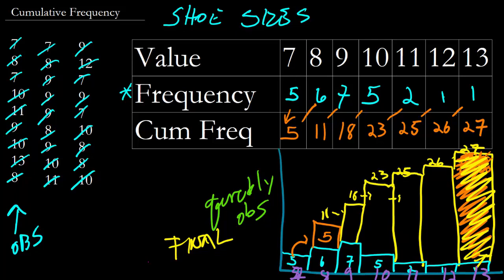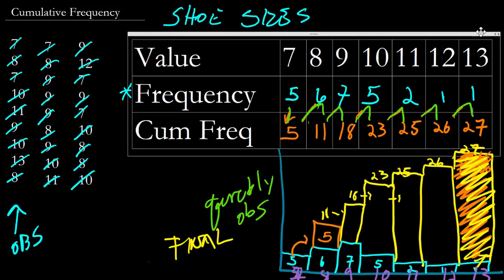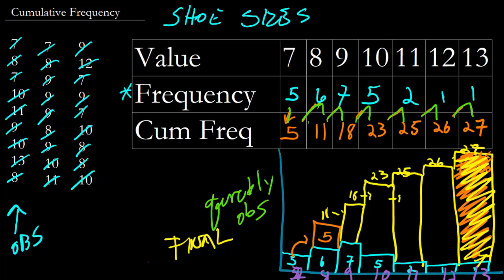And again, the way that we do this is by taking the relative frequency or the normal frequency and adding to it the next observation. So 5 and 6 is 11, 11 and 7 is 18, 18 and 5 is 23, 23 and 2 is 25, 25 and 1 is 26, 26 and 1 is 27. And that's how we calculate cumulative frequency.